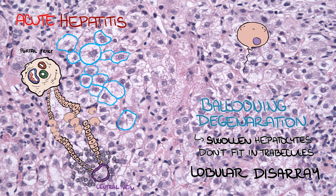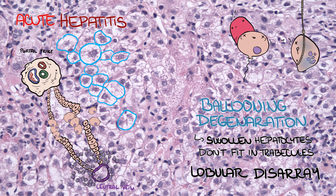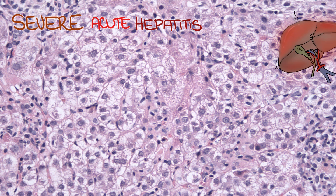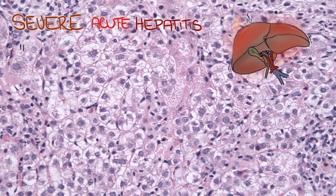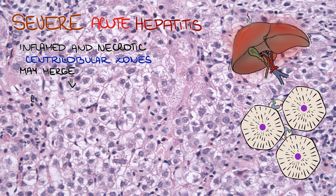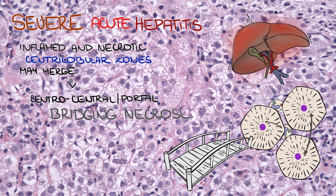As time passes, hepatocytes die by necrosis and apoptosis. In case of severe acute hepatitis, the inflamed and necrotic centrilobular zones of liver lobules may merge and create centrocentral or centroportal bridging necrosis. Bridging necrosis may be seen in chronic hepatitis as well, but they are more typical for acute hepatitis.